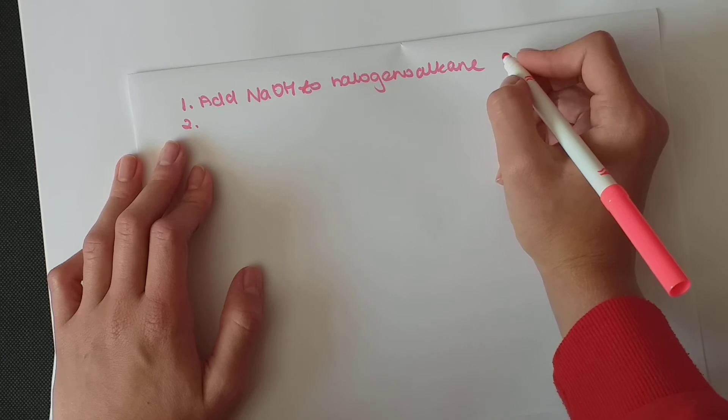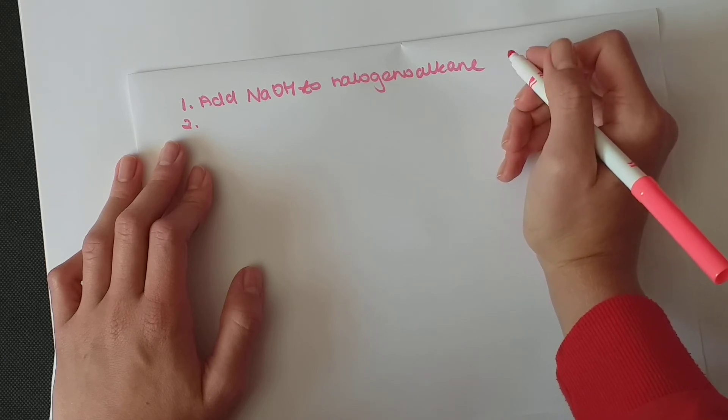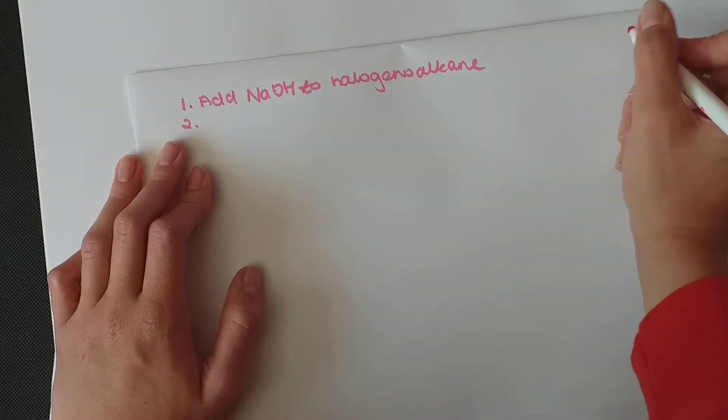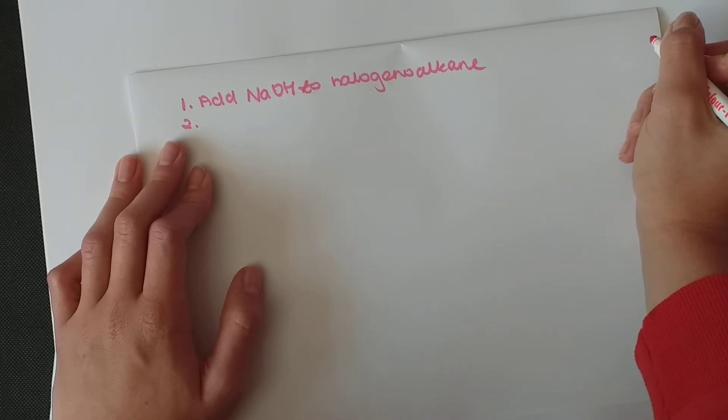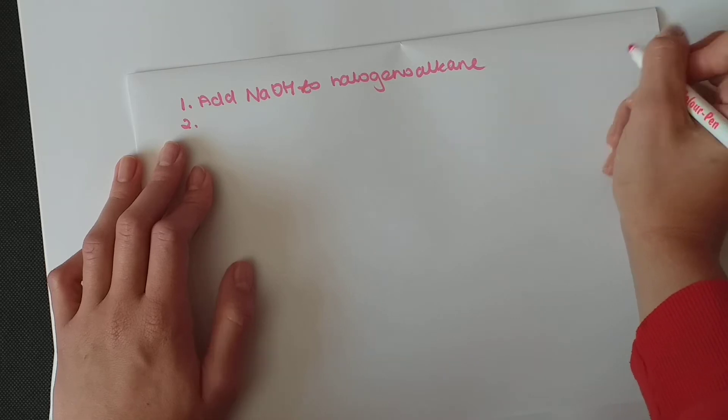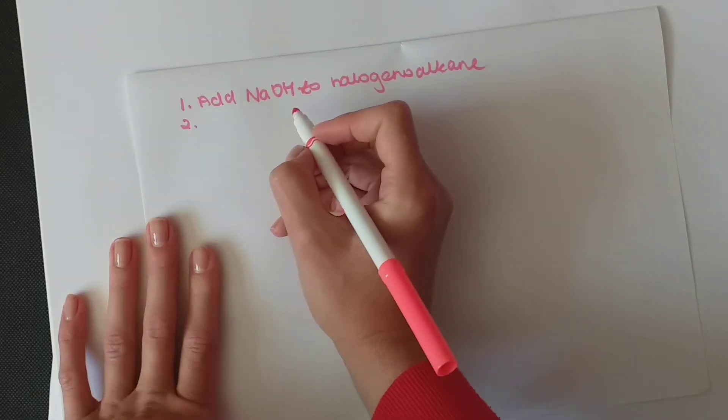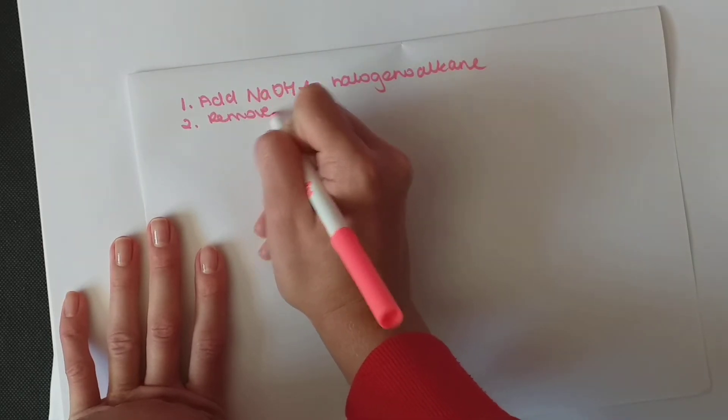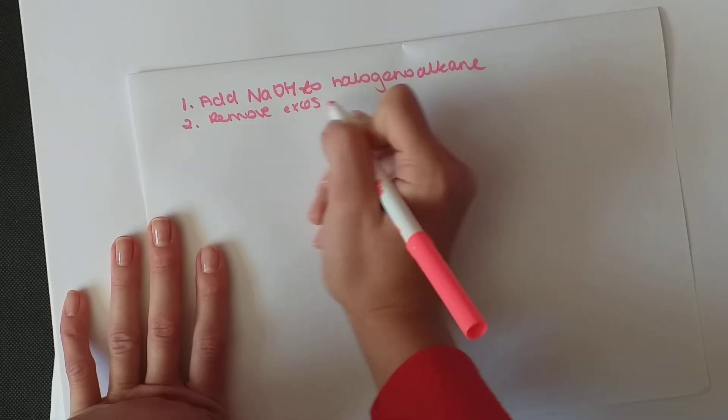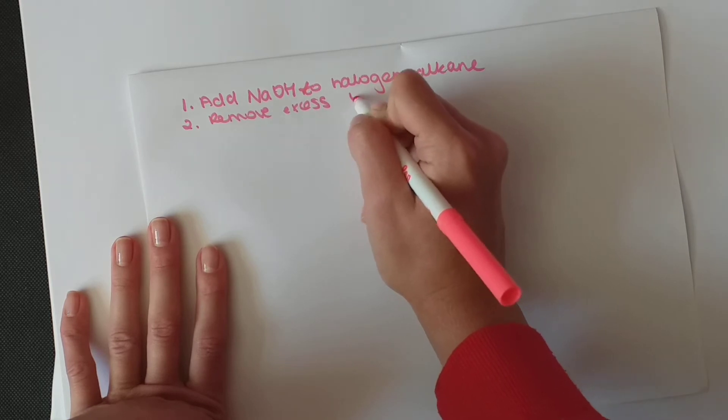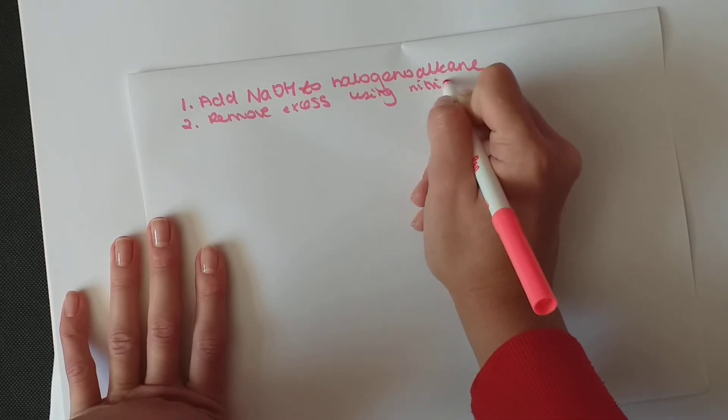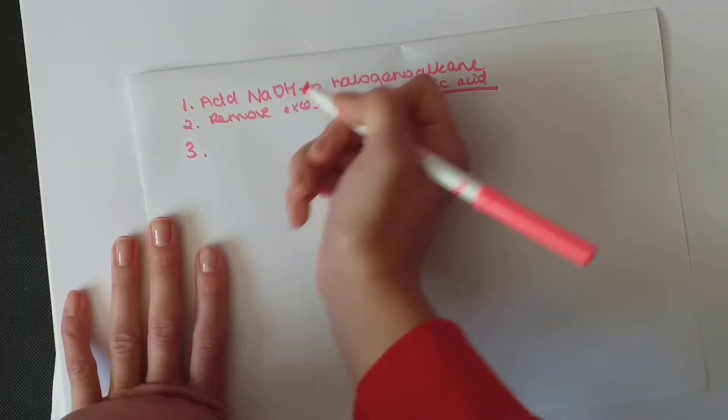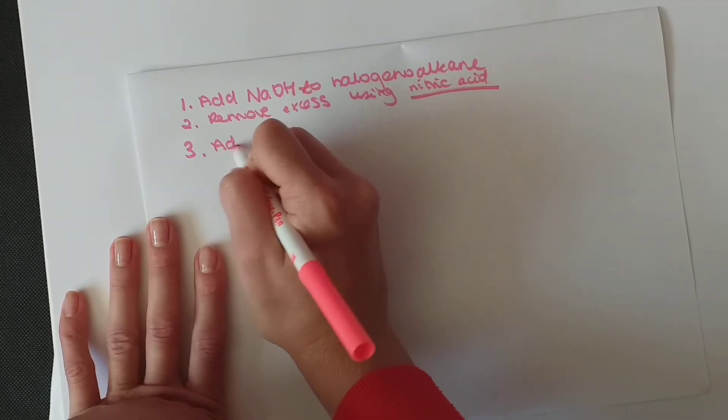We form an alcohol because, remember, in nucleophilic substitution when you created an alcohol, what you were left with was that halogen with a minus and that's what we're aiming for. So after you add your sodium hydroxide, we need to remove the excess of it using nitric acid.